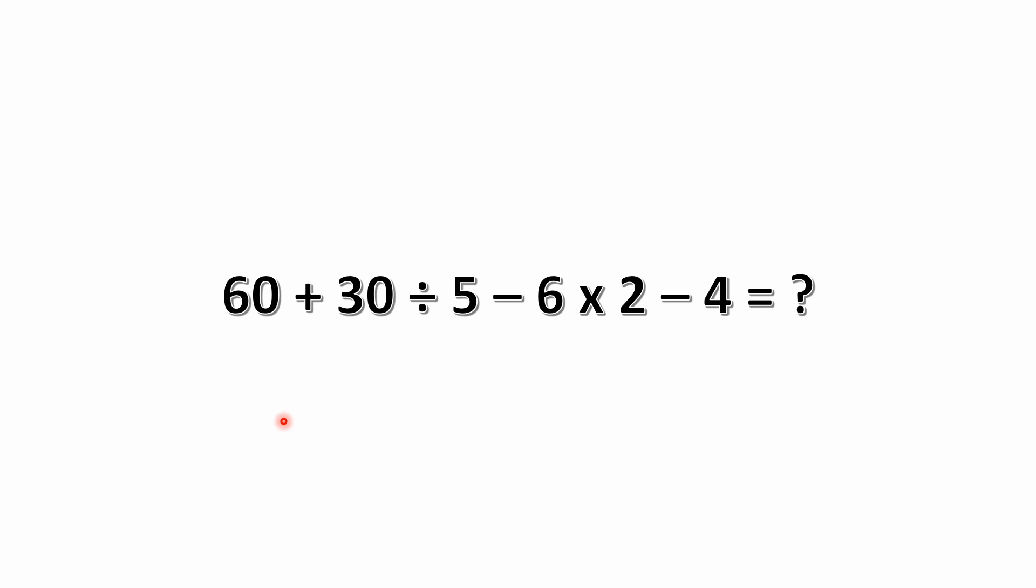It's got multiple operations in it. We've got addition, subtraction, some multiplication, and division. The problem is 60 plus 30 divided by 5 minus 6 times 2 minus 4 equals what?